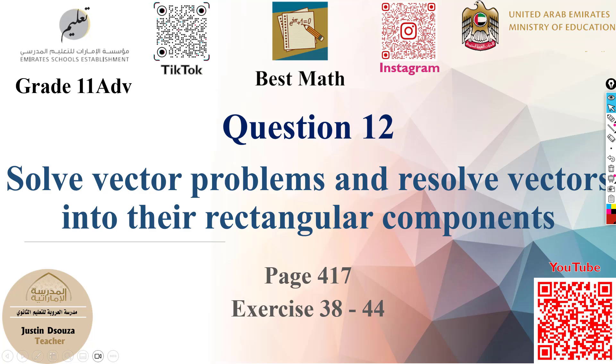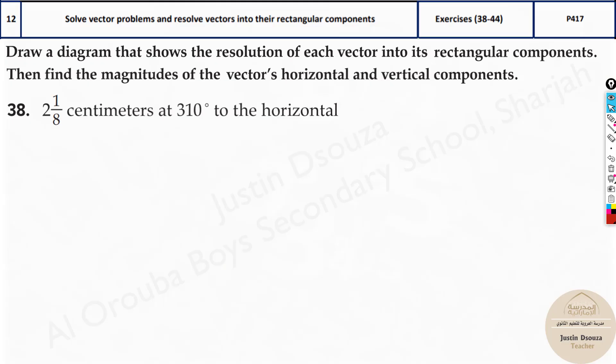In this video we will learn how to resolve a vector into its rectangular components, that is the horizontal and vertical components. Here in this problem we have been given 2 1/8 centimeters at 310 degrees to the horizontal. What does this mean? This is the magnitude, this is the degrees.